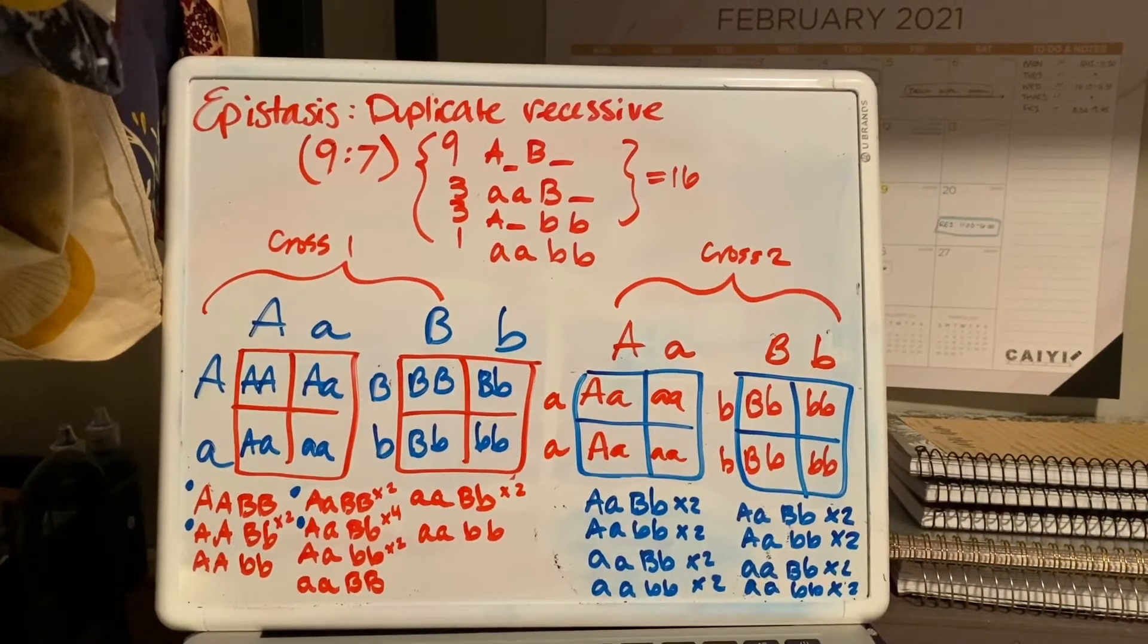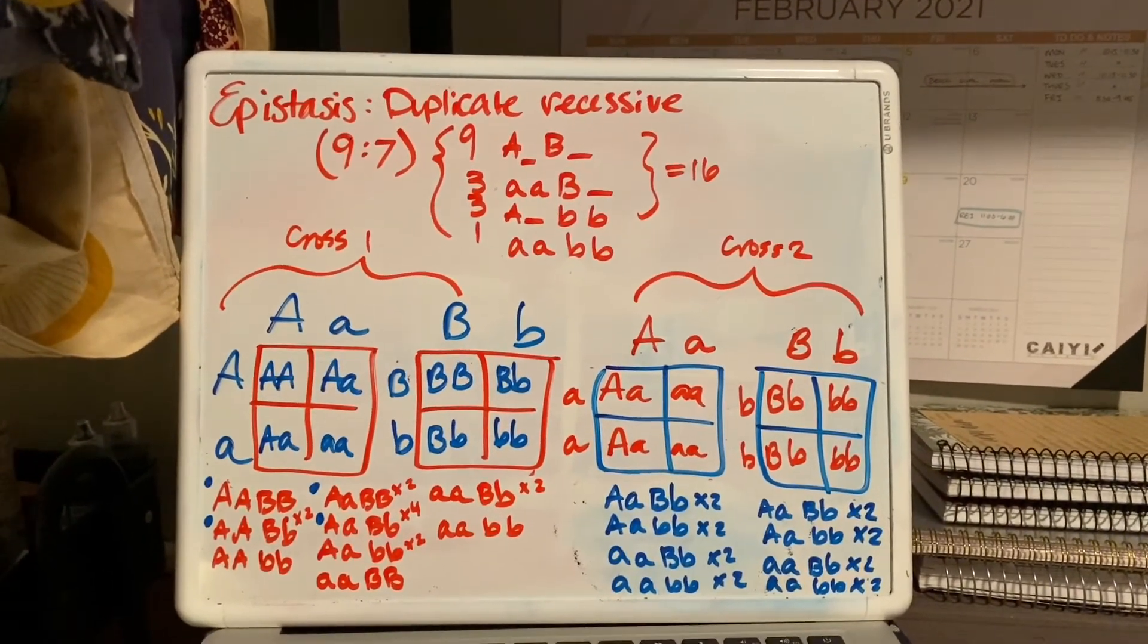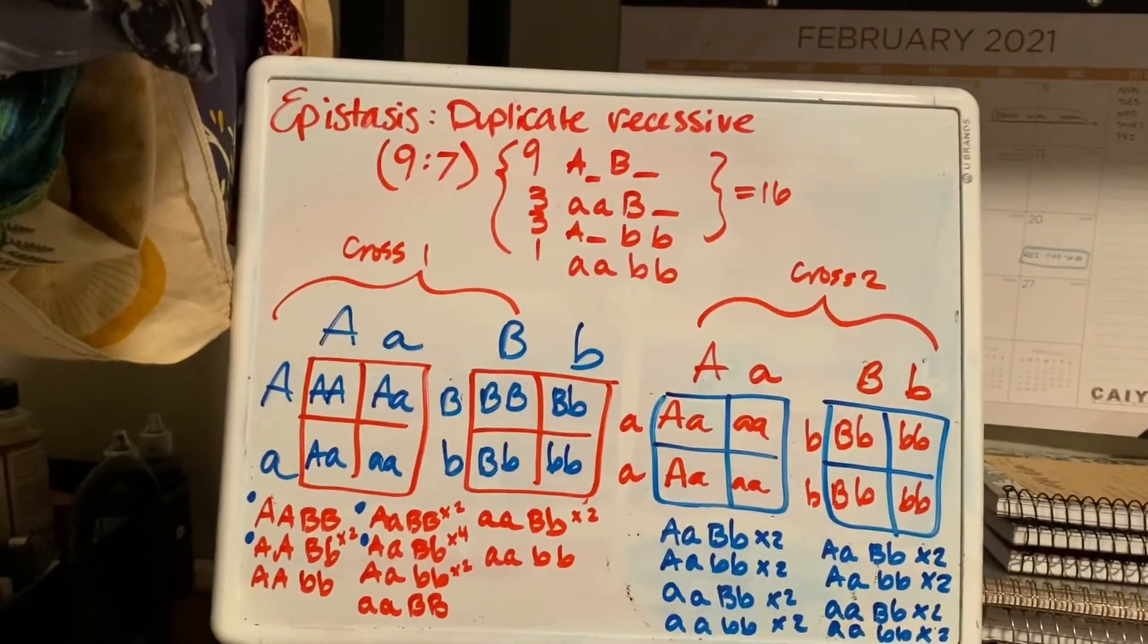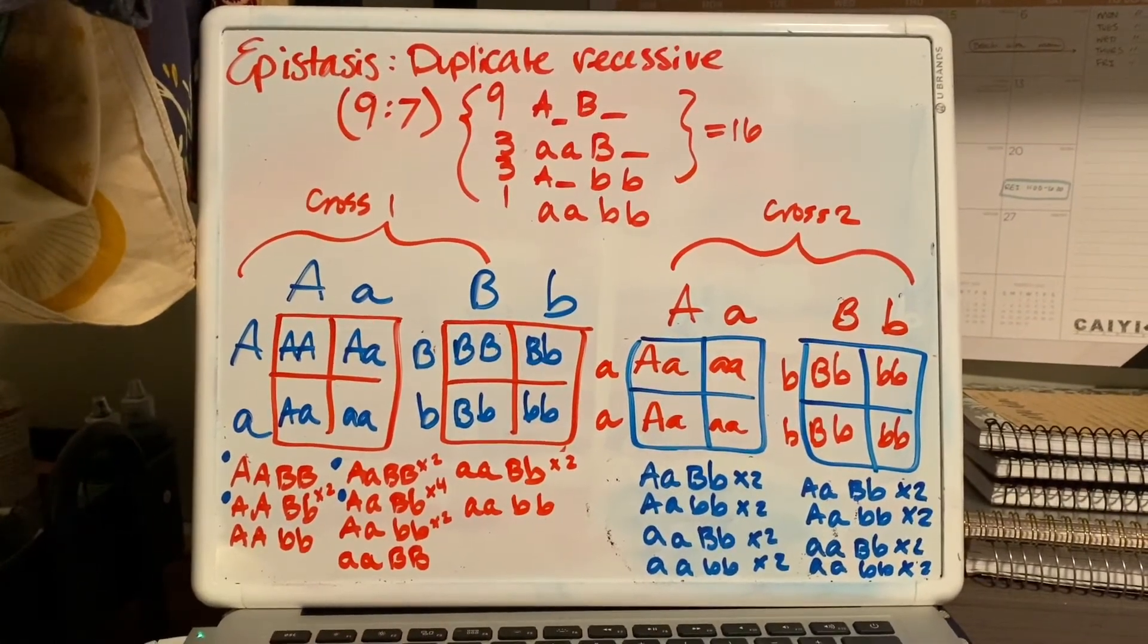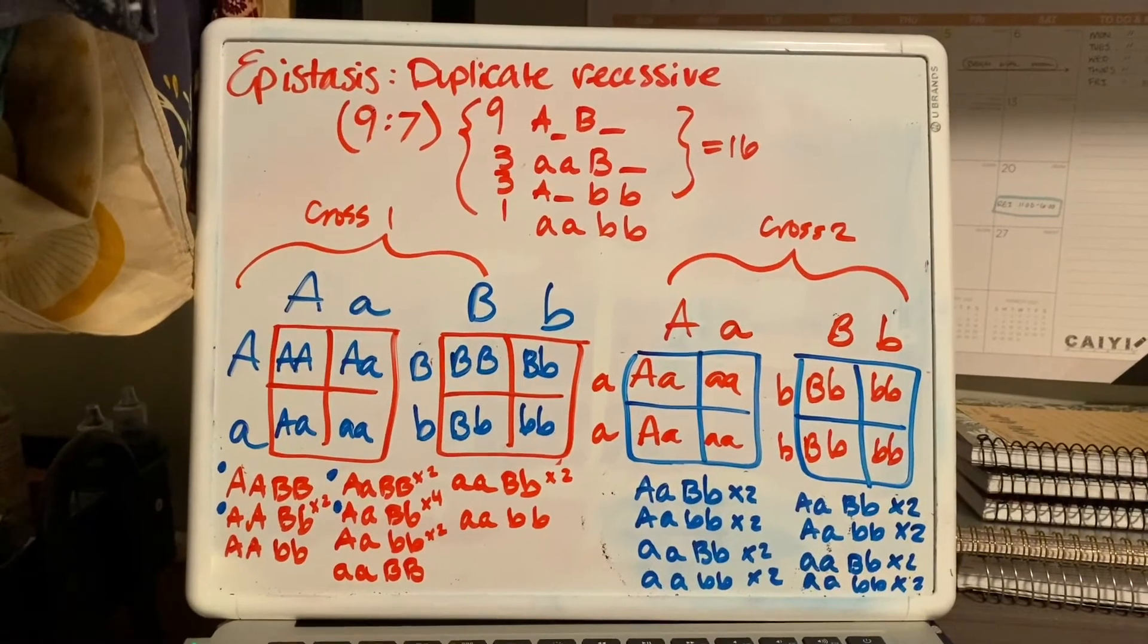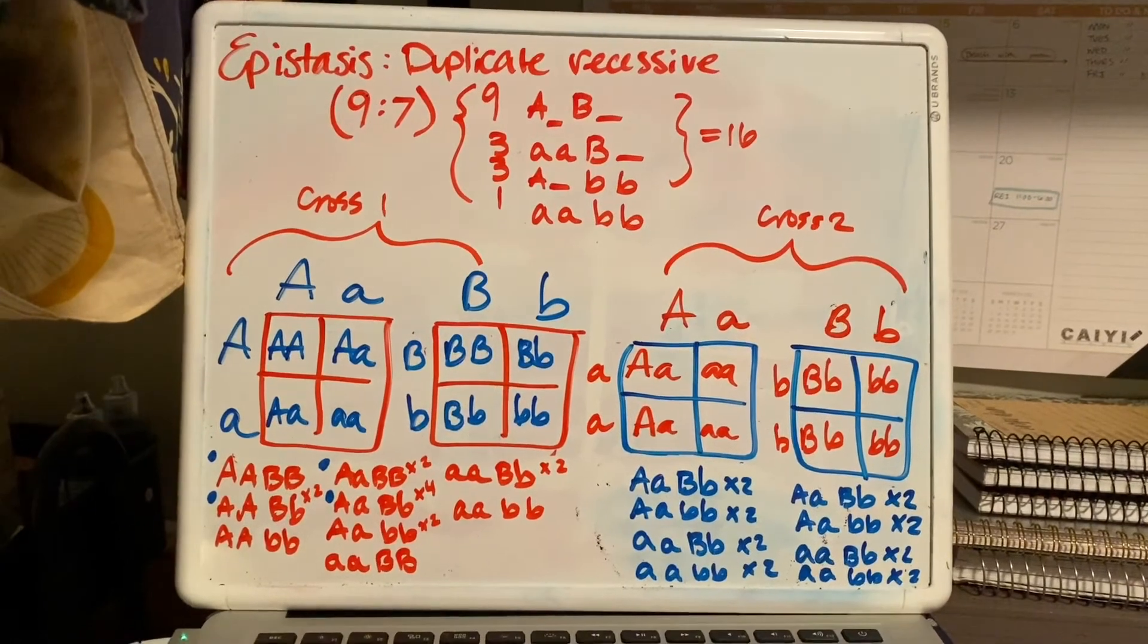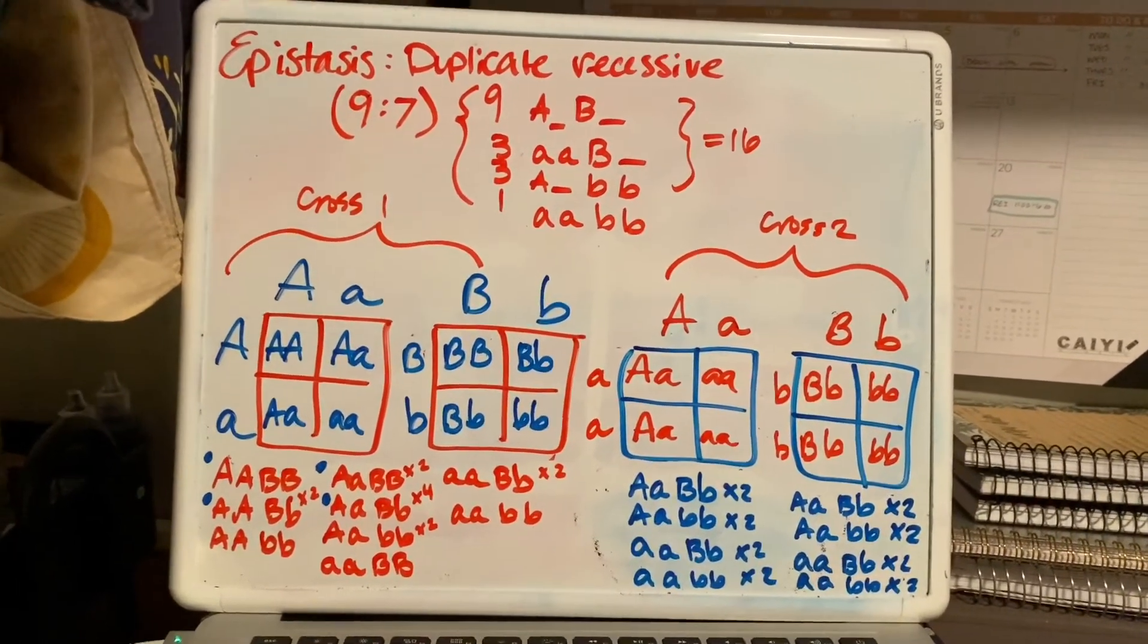Keeping this ratio in mind, we do our first test cross, which is a dihybrid cross, and we see the ratio reflected in our results. So basically, I split up the two Punnett squares, and then we got the phenotypes that match the ratio. So the 9, either heterozygous or homozygous dominant, is reflected with the blue dots if you add those up, and then so on throughout the ratio.